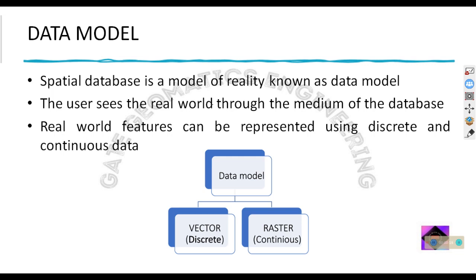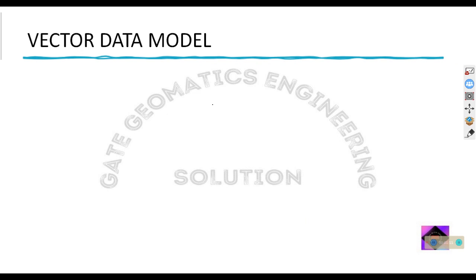Today we are going to start a new topic: the data model. In spatial databases, there are two types of data models — one is discrete and another is continuous. The discrete type is named the vector data set and the continuous type is named the raster data set. We use the data model to bring the real world into our computer system. Spatial database is a model of reality, and real world features can be represented as discrete and continuous.